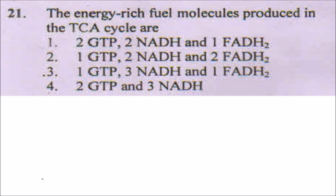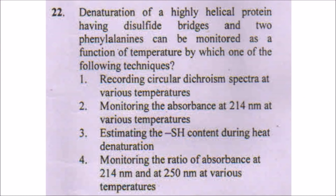This question is from the Krebs cycle. We know that in the Krebs cycle, one molecule of GTP is produced, three molecules of NADH are produced, and one molecule of FADH2 will be produced. So the answer is number three.